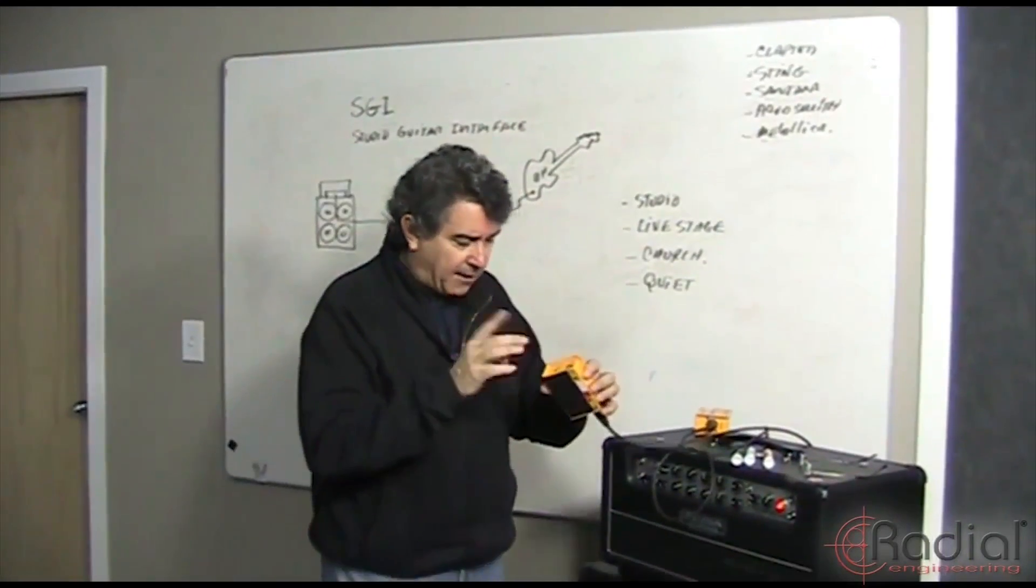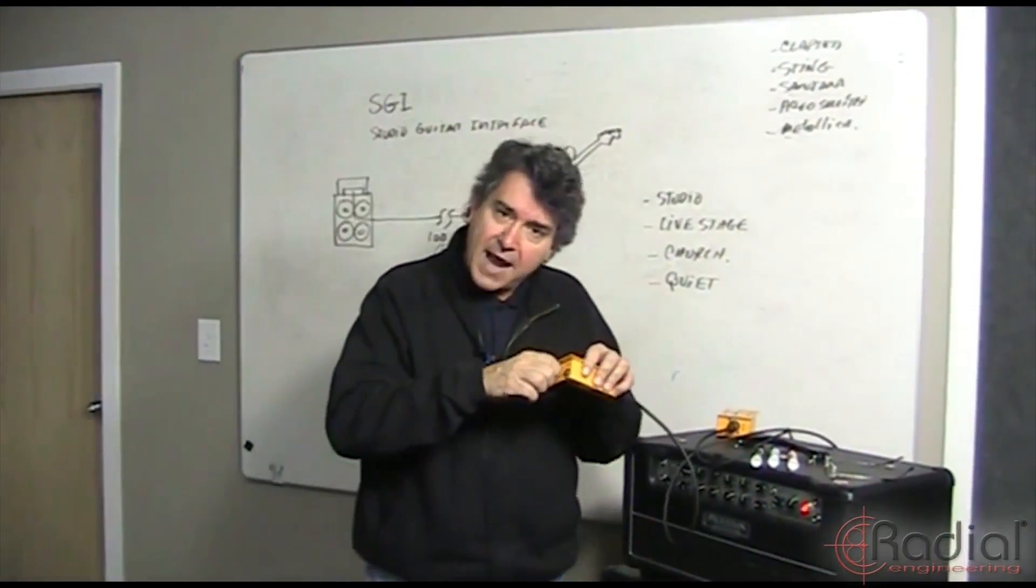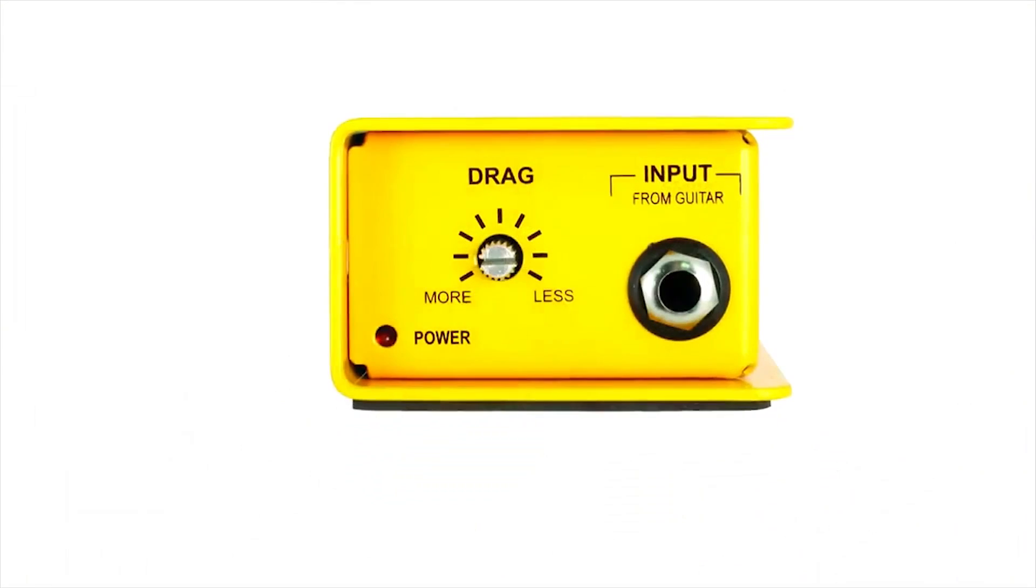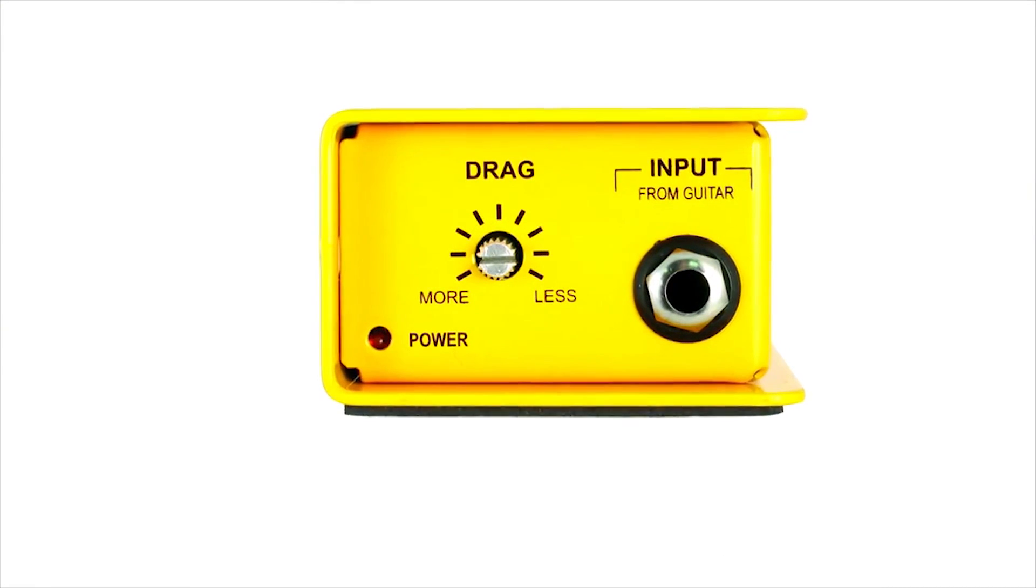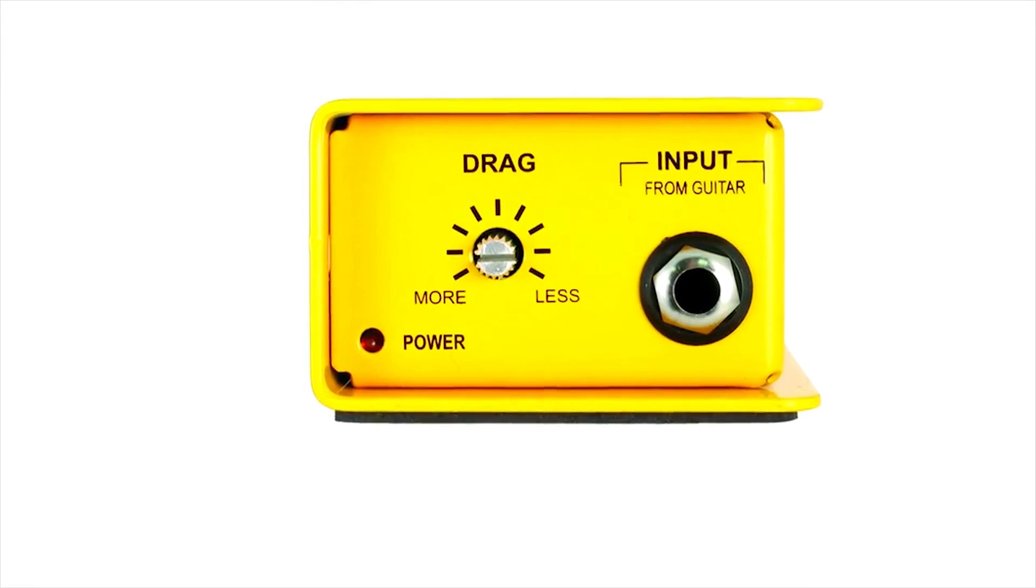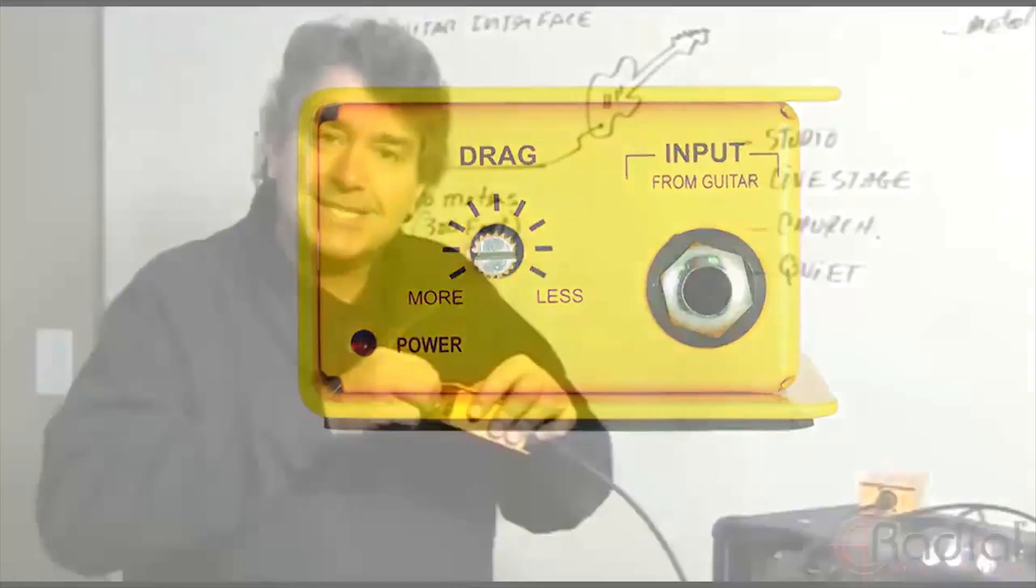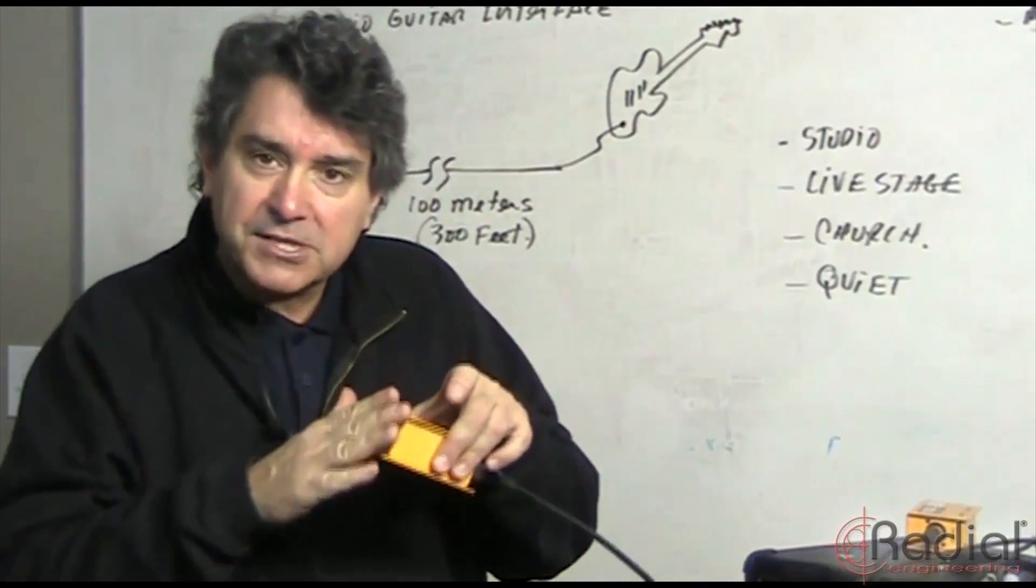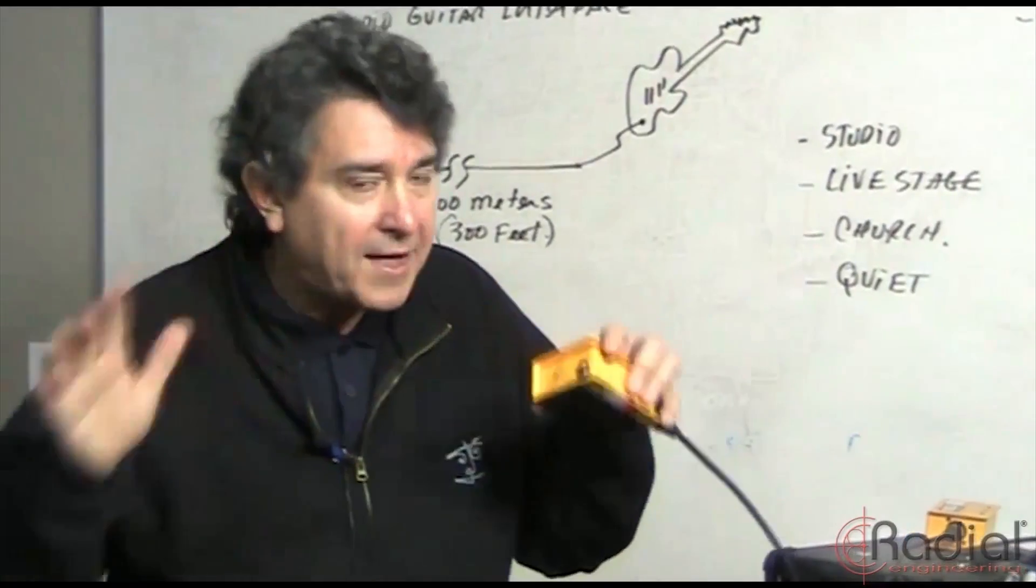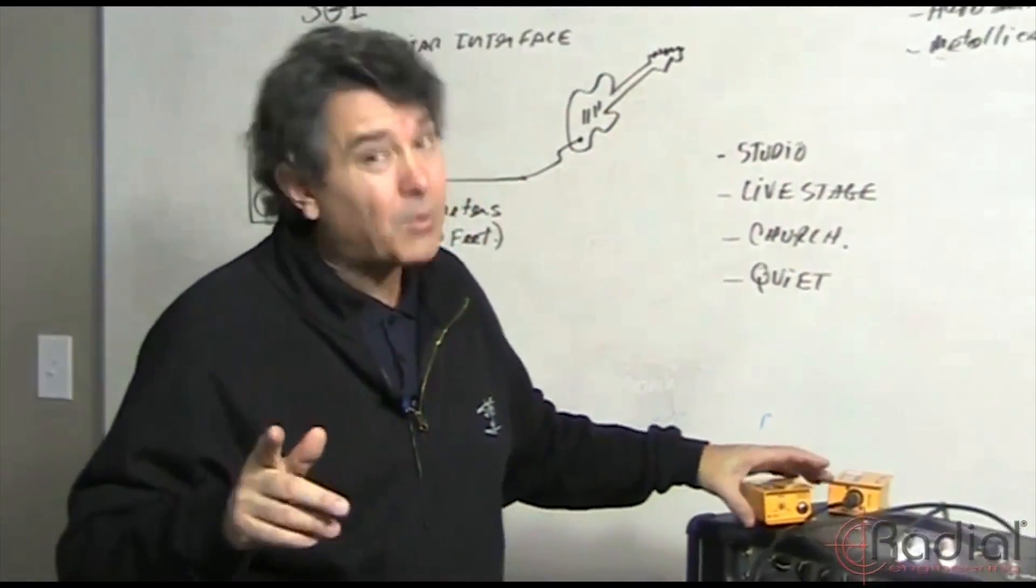The other cool thing is we've got drag control on this, and what that does is simulate the load as if your guitar were connected directly to your amplifier. You can actually adjust it so that it sounds natural. This is a buffering system, an isolation device—it does all that stuff at the same time. How does it sound? Well, it sounds pretty amazing. It's all Class A.